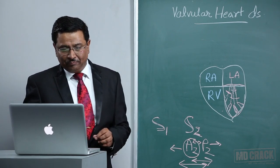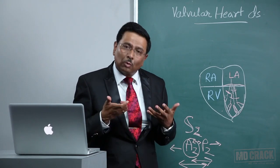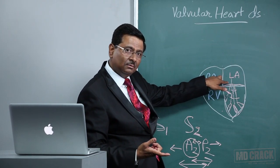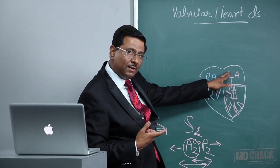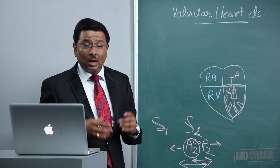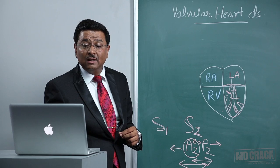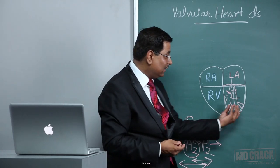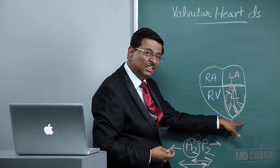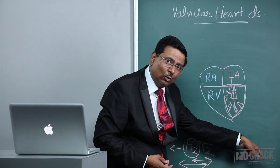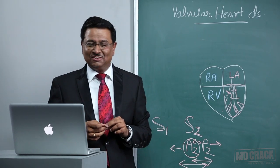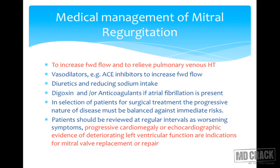Medical management of mitral regurgitation aims to reduce regurgitation and increase forward flow. We give vasodilators like ACE inhibitors — vasodilation reduces total peripheral resistance, so more blood flows into the aorta rather than back into the left atrium. This is how vasodilators are effective in mitral regurgitation: they reduce total peripheral resistance or aortic impedance, thereby increasing forward flow.